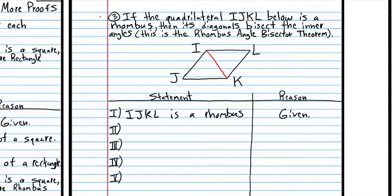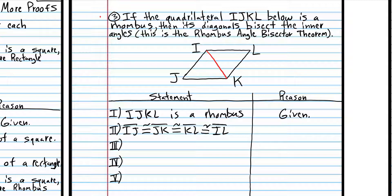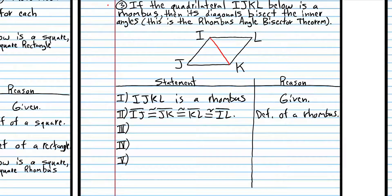We know that all the sides are congruent: IJ is congruent to JK, which is congruent to KL, which is congruent to IL. We know that because it's the definition of a rhombus — by definition, all the sides must be congruent. We also know that IK is congruent to itself, and that's the reflexive property of congruence. Therefore, triangle JIK is congruent to...